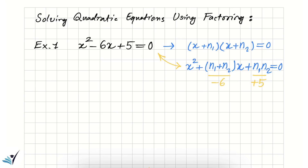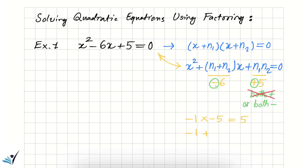Because n1 times n2 is a positive number, both n1 and n2 have to be either both positive or both negative. But because n1 plus n2 is negative, it is not possible for both of them to be positive. So as a result, n1 and n2 are both negative numbers. We try negative 1 and negative 5: negative 1 times negative 5 equals 5, and negative 1 plus negative 5 equals negative 6.